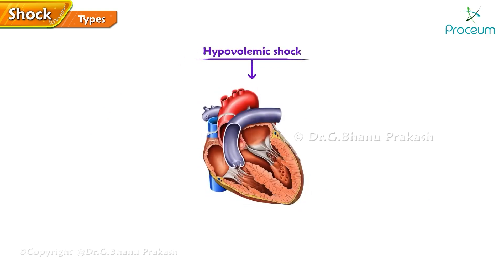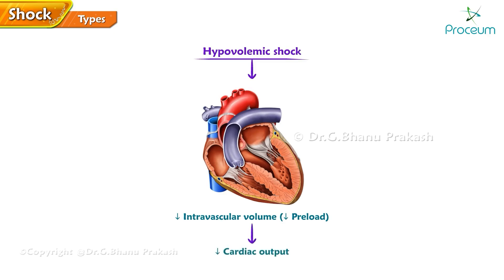Hypovolemic shock is due to reduced intravascular volume — that is, reduced preload — which in turn reduces cardiac output. Hypovolemic shock can be divided into two categories: hemorrhagic and non-hemorrhagic.